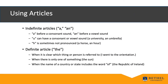Articles are another important word class in English. We have two indefinite articles — a and an — and one definite article, the. Use 'a' before a consonant sound and 'an' before a vowel sound. Remember the letter U can have a consonant or vowel sound, like 'a university' or 'an umbrella,' and the letter H is sometimes not pronounced: 'a horse,' 'an hour.' Use 'the' when it's clear which thing or person is referred to, when there is only one of something like 'the sun,' or when a country or state name includes the word 'of,' like 'the Republic of Ireland.'